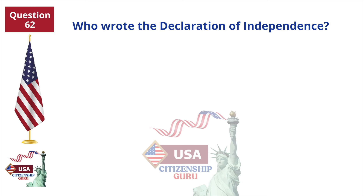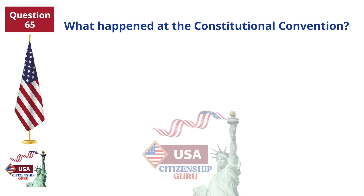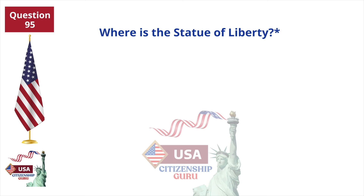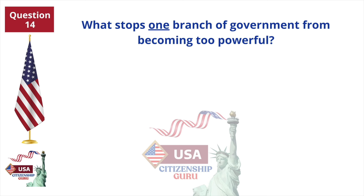Who wrote the Declaration of Independence? Thomas Jefferson. What happened at the Constitutional Convention? The Constitution was written. Where is the Statue of Liberty? New York Harbor. What stops one branch of government from becoming too powerful? Checks and balances.